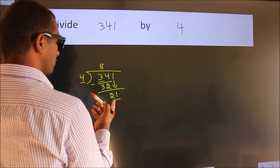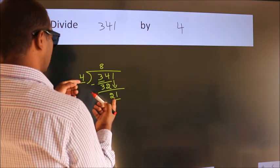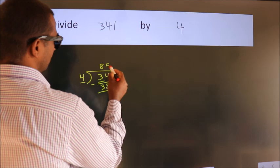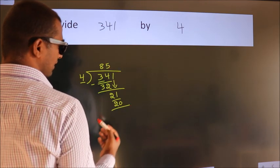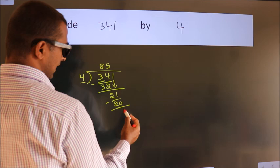A number close to 21 in the 4 table is 4 times 5, which is 20. Now we subtract. We get 1.